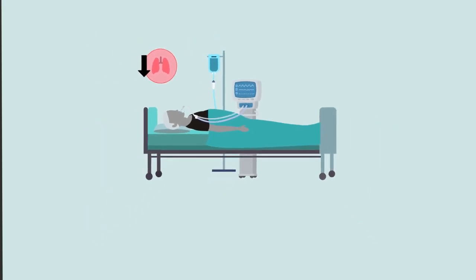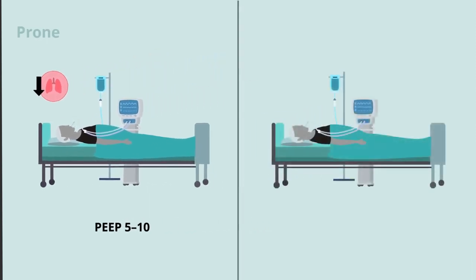Patients with poor recruitability were managed with PEEPs of 5 to 10, while those with high recruitability were managed with higher PEEP.